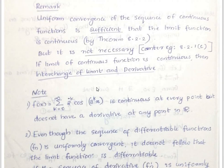Remark: the uniform convergence of a sequence of continuous functions is sufficient to guarantee that the limit function is continuous. That is not necessary. If the limit of continuous functions is continuous, then we can discuss the interchange of limit and derivative.